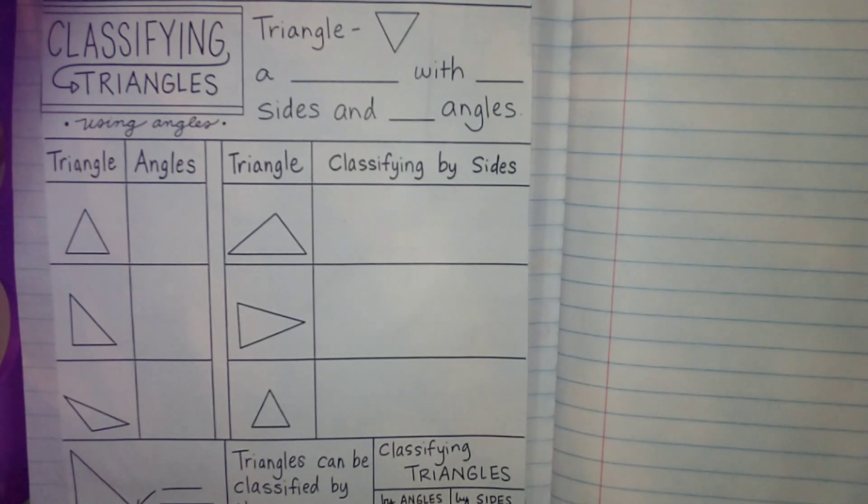Triangles have two names, their first name and their last name. One of their names focuses on their side lengths and one of their names focuses on their angle sizes, which is what we kind of talked about in the last lesson.